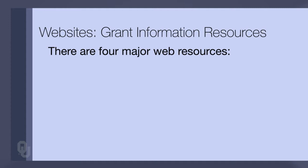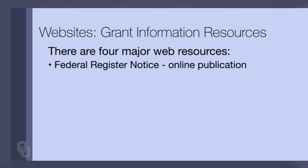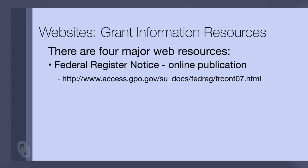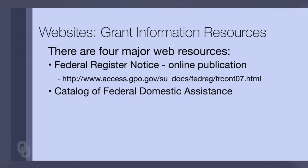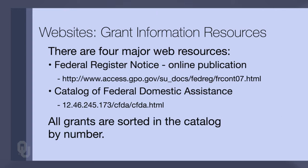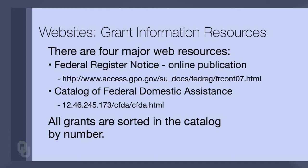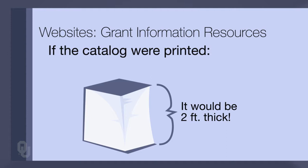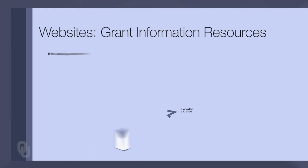The main websites with the large majority of grant information resources include the Federal Registry — a newspaper that appears online with notices of all federal grants. The Catalog of Federal Domestic Assistance is another resource. All federal grants must be cataloged by number, and you can find all grants in a particular category if you find the number. If it were printed, the Catalog would be about two feet thick — it's a huge document covering everything the federal government gives away.